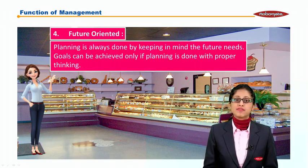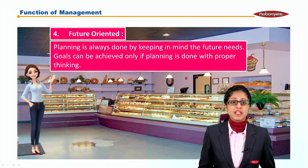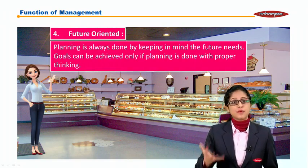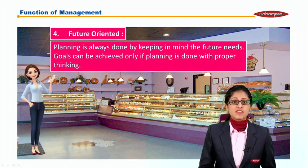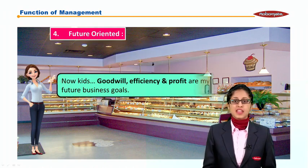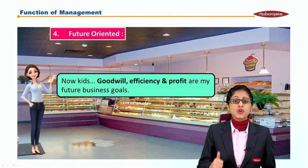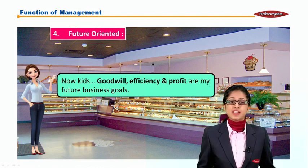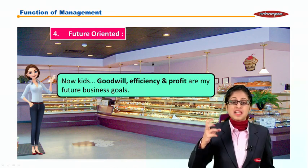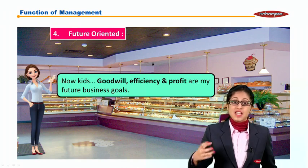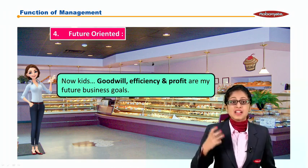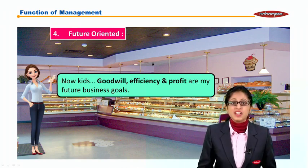The fourth nature is future oriented. Planning is always done by keeping in mind the future needs — profit, goodwill, brand. Goals can be achieved only if planning is done with proper thinking. Annie says: 'Kids, goodwill, efficiency, and profit are my future business goals.' She is predicting what her business needs — she needs goodwill, she needs efficiency, she needs profit. These are her desires when she talks about her business.